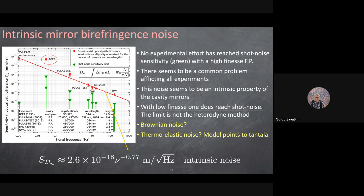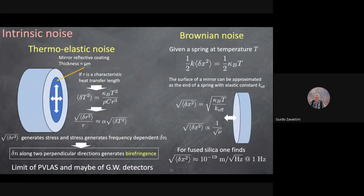The noise source is not shot noise but thermal noise — in the thermodynamic sense. Consider a harmonic oscillator: each degree of freedom at temperature T contributes ½k_B·T of average energy, causing constant motion. A mirror behaves similarly — its surface is never still. For fused silica, standard high-quality optical glass, the resulting surface motion is about 10⁻¹⁹ meters per √Hz — exactly matching our experimental limit.